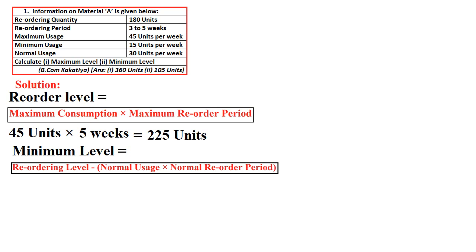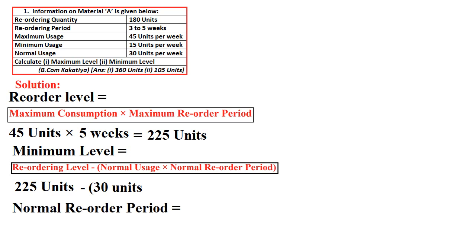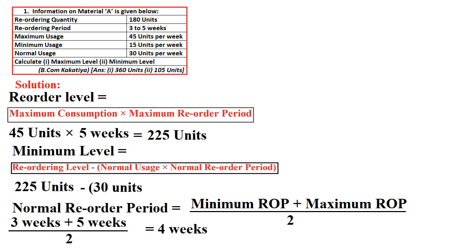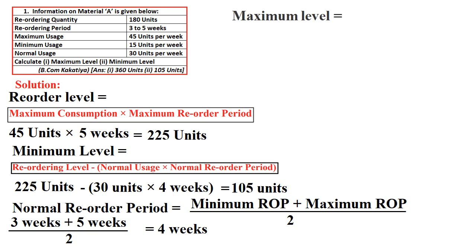Minimum level is calculated as reorder level minus normal usage multiplied by normal reorder period. Reorder level is 225 units. Normal usage is 30 units. Normal reorder period is (3 + 5) ÷ 2 = 4 weeks. Therefore: 225 − (30 × 4) = 225 − 120 = 105 units is the minimum level.